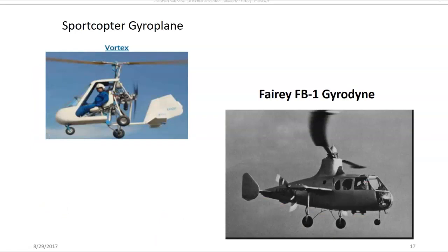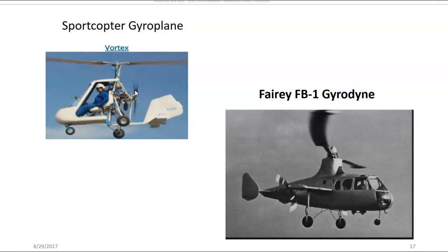Here we have an example of a gyroplane on the left and a gyrodyne on the right. These are both rotorcraft category aircraft as it applies to airman certification. The gyroplane has a rotor, but the rotor is not powered by an engine. The rotor spins as the aircraft starts to move forward, and that's what creates lift. Notice on the gyroplane there's a pusher propeller with an engine — that's what propels the aircraft forward. As the gyroplane moves forward due to the thrust produced by the pusher propeller, the rotor at the top starts to spin and produces lift.